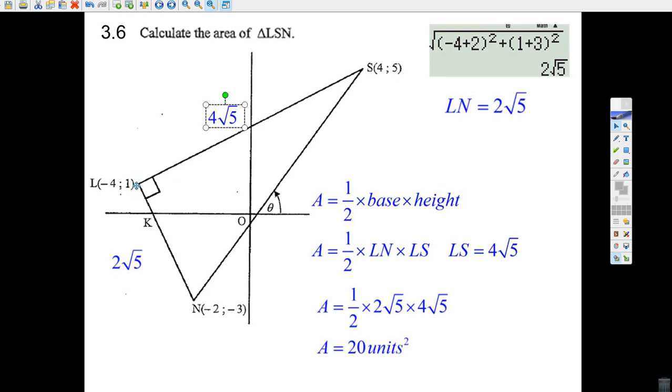Well, that's the height of the triangle, and this is the base. We just have to find out how far it is from L to N, and all we do is put it in the distance formula: minus 4 plus 2 squared, 1 plus 3 squared, add them together, take the square root. My calculator says 2 root 5.